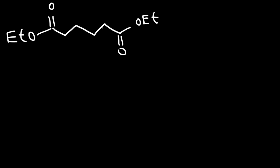Now let's try another example. Here we have another molecule with two ester functional groups, but we also have a methyl group attached to it. Go ahead and predict the major product for this reaction — it turns out you get a mixture of products. Because this molecule lacks symmetry, we can get two different products by removing two different alpha hydrogens. Let's call this hydrogen A and the other one hydrogen B.